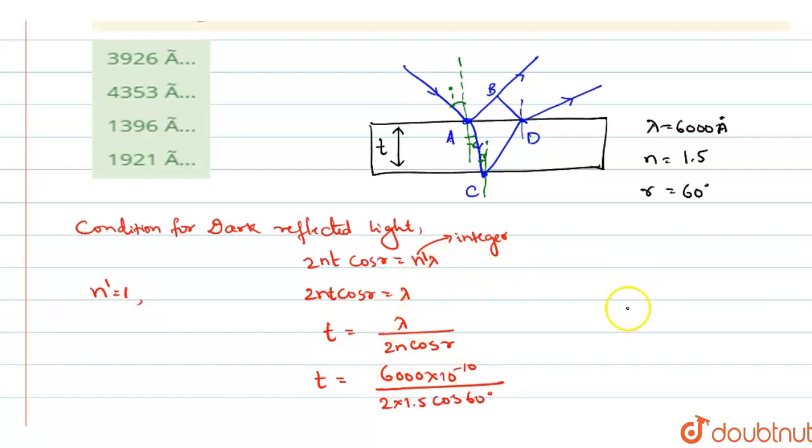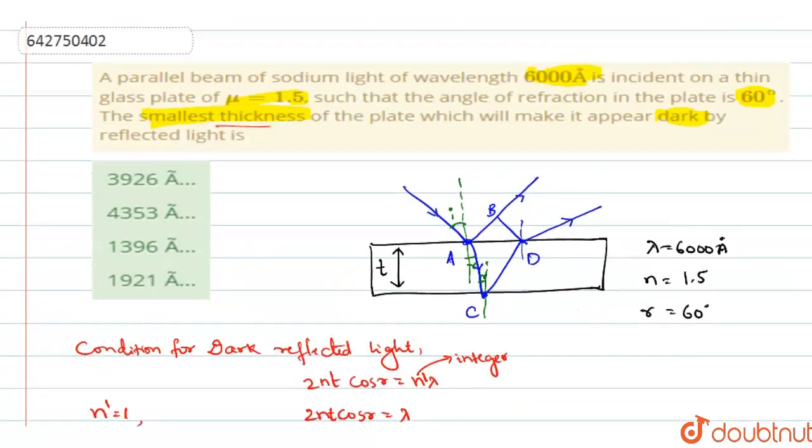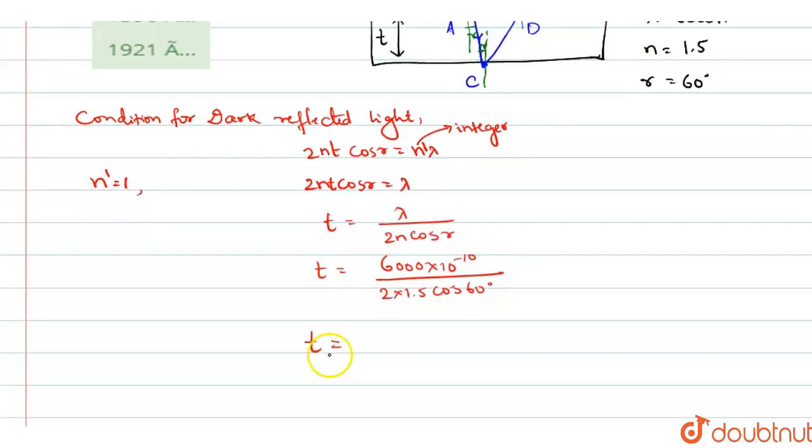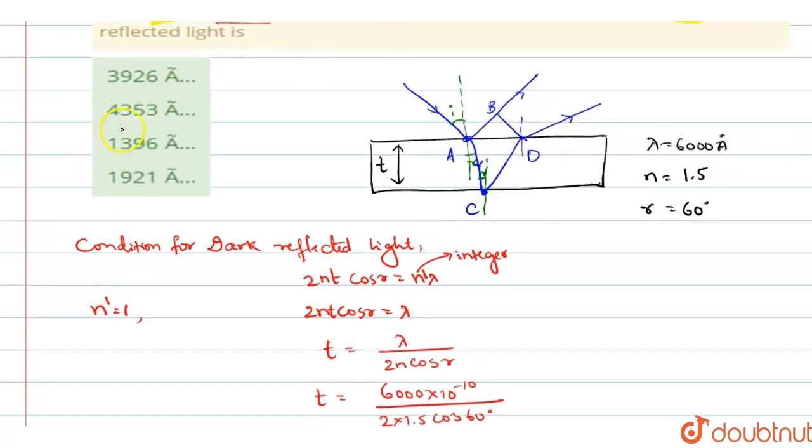So when you simplify all these values, when you simplify this, the T value approximately comes out to be 4000 angstrom. So now see to the choices you have. Among the choices, 4353 is the correct answer.